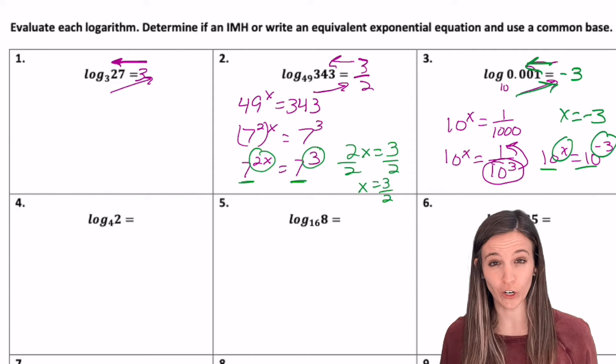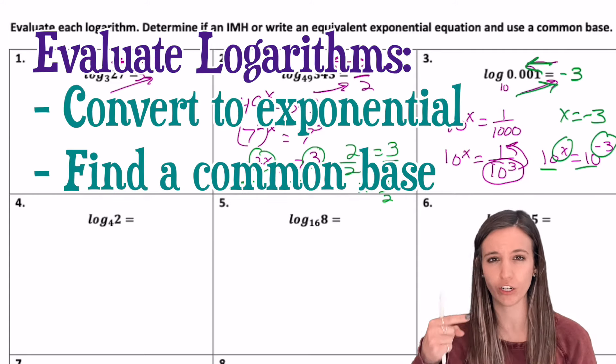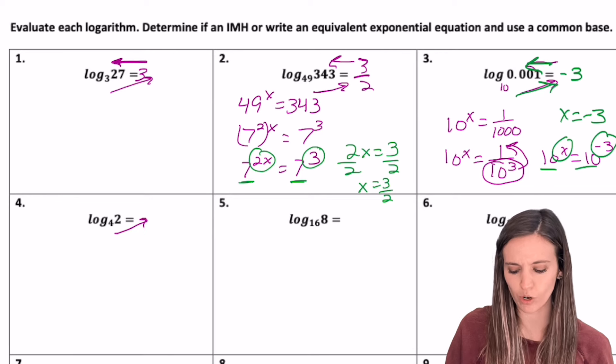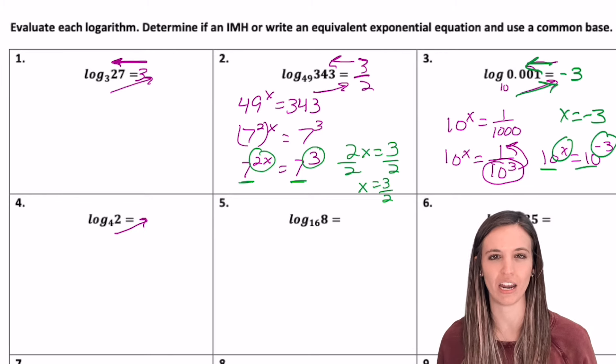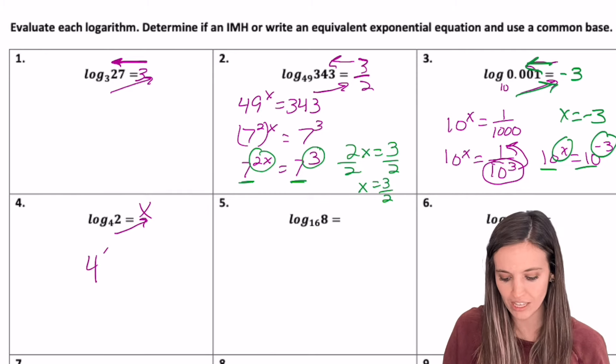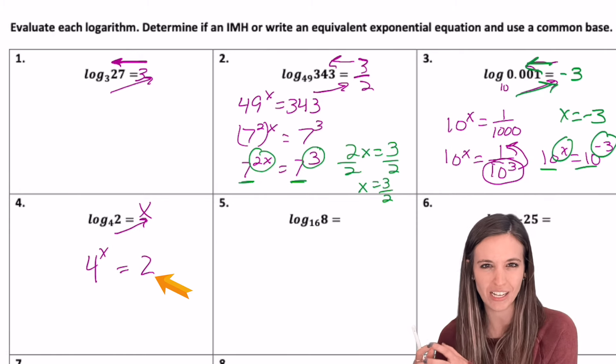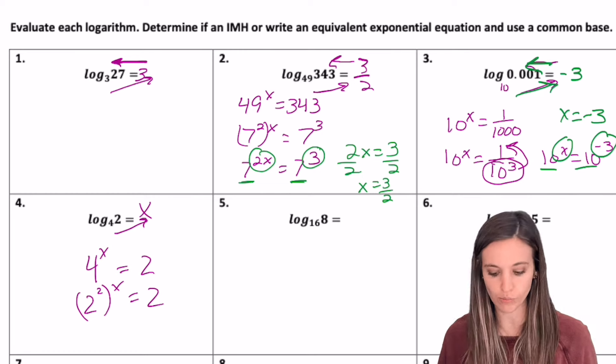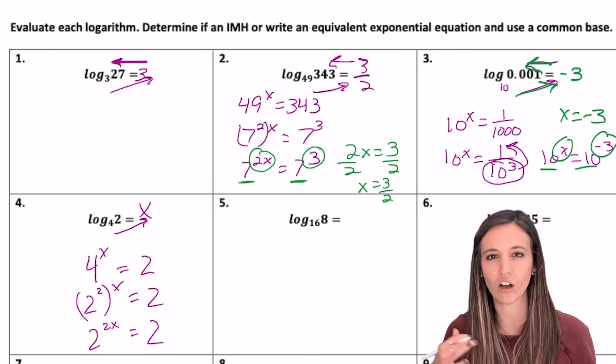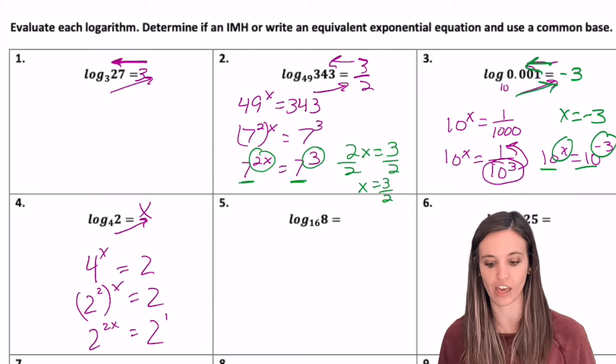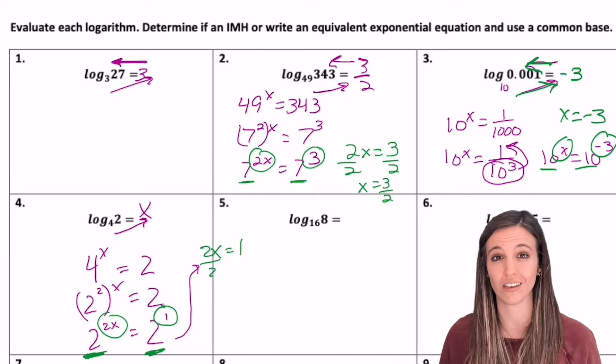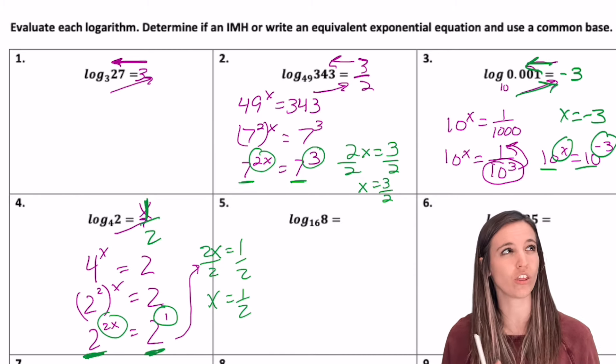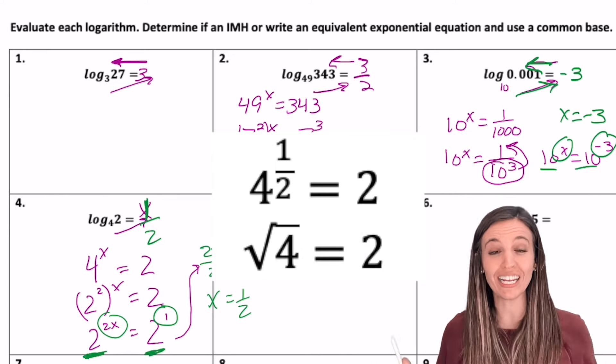So basically we're tackling these logarithms by first seeing if they're an in my head problem. And if they're not, then we convert to exponential and try to find common base to figure out the exponent. Looking at four, we've got log base four of two. So four to what power is two? Once we get better at these, we might know that one in our head. But for now, let's go ahead and set it up in exponential. So four to the X equals two. All right, common base. Well, I have a base of two on the right side. So I might as well make this four two to the two to the X equals two. Well, close by multiply two to the two X equals two. Well, look, I have a common base. We can throw a little one exponent on the other side. Bases are the same. So I can set those exponents equal to each other. Two X equals one. Well, look at that. I get X equals one half. So log base four of two equals one half. Does that make sense? Four to the one half power, one half, that's a square root. The square root of four is two. So it does work.